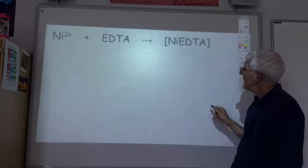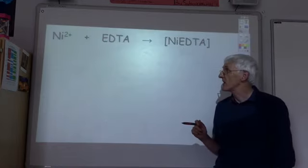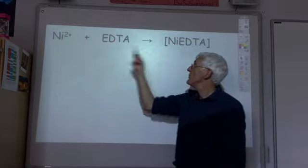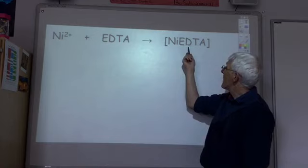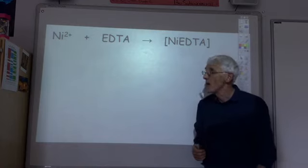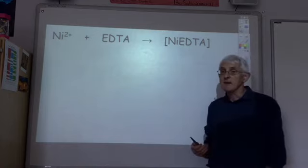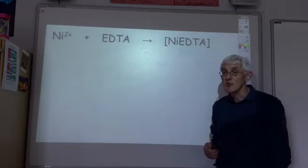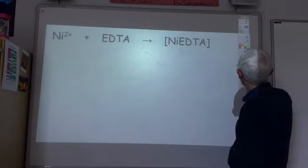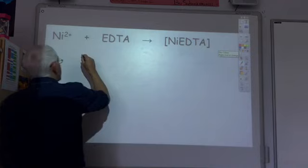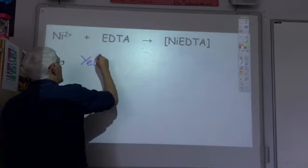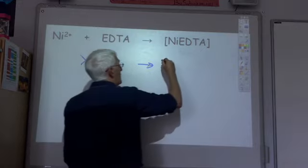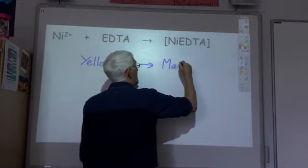So here's the balanced stoichiometric equation for the titration. Simply one mole of nickel ions reacts with one mole of EDTA to form our nickel EDTA complex. We do need an indicator to identify the end point of the reaction. The indicator we're going to use is called murexide which initially gives us a yellow colour, but the end of the reaction will be identified by the change from yellow to a reddish mauve colour.